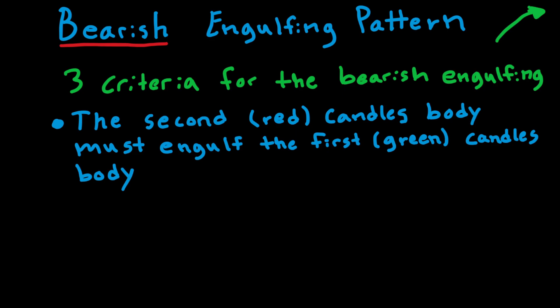To illustrate: we have a green candle and a red candle, and by 'engulf' we mean that the red candle must wrap around the green candle. The top of the red candle's real body is above the top of the green one, and the bottom of the red candle's real body is below the bottom of the green one. So the red candle engulfs, or wraps around, the green candlestick.